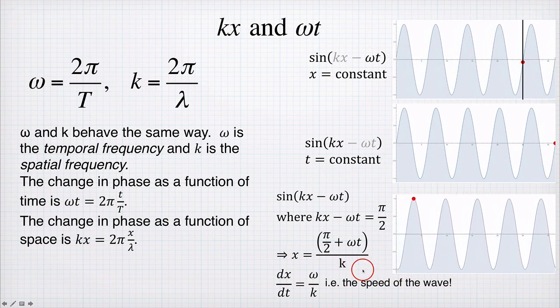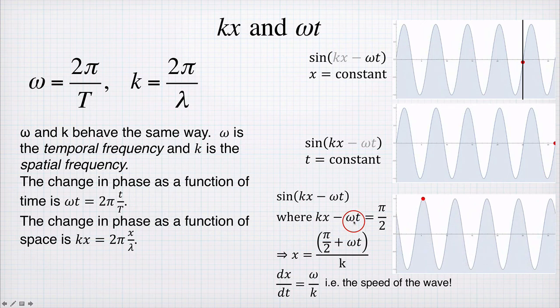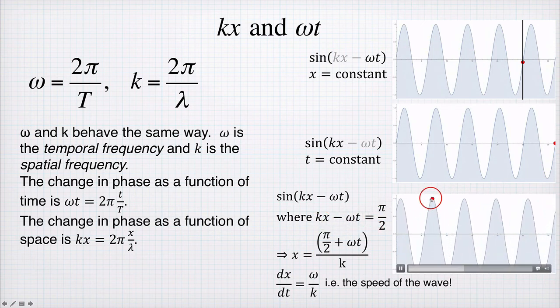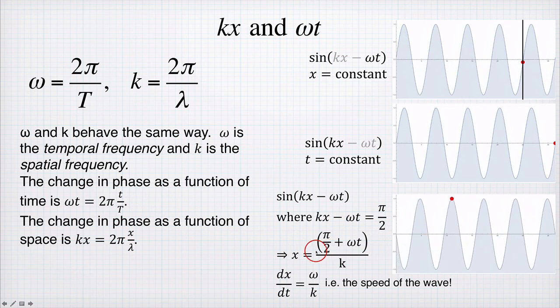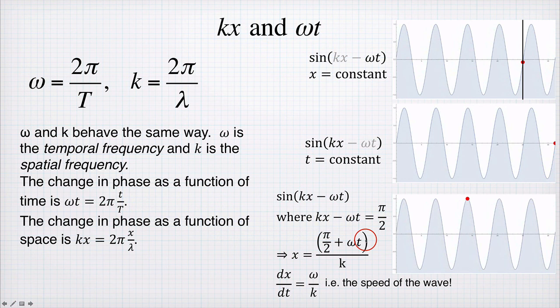In other words, it's this. We know that the argument is a constant. It's always at the peak of the wave. So this dot moves along with the peak. And its position x is given by this function of time. If I want to know how fast this dot is moving, I could find dx/dt.